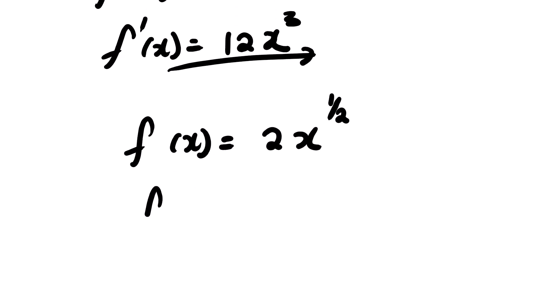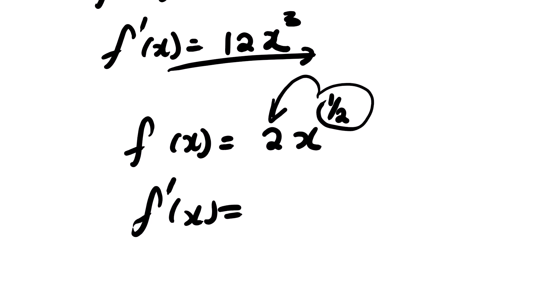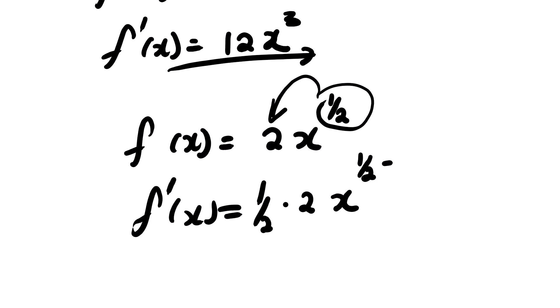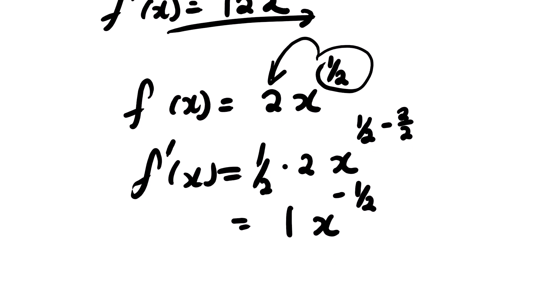Another example: the derivative of 2x to the power 1/2. We have one-half multiplied by 2, which gives us 1, times x to the power one-half minus 1. One-half minus 1 equals negative one-half. So the derivative of 2x^(1/2) is x to the power negative 1/2.